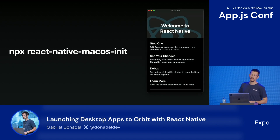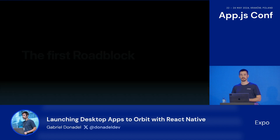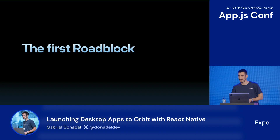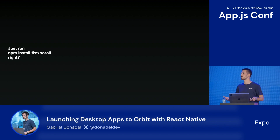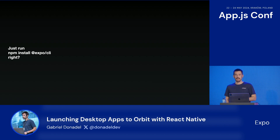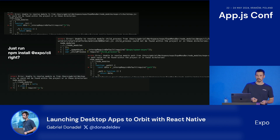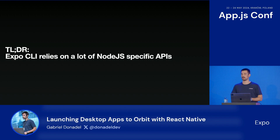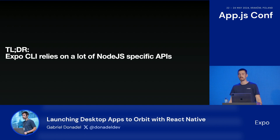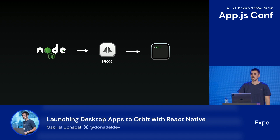For this proof of concept, we went through the documentation and created a brand new React Native macOS project. This was super fun, but after a few moments, we noticed our first roadblock: how to reuse those functions from Expo CLI. Can we just import them directly? Can we just run NPM install Expo CLI? We won't say we didn't try it, but things were not that simple. The TLDR is that Expo CLI relies on a bunch of Node.js-specific APIs, which are just not available in a normal React Native environment.